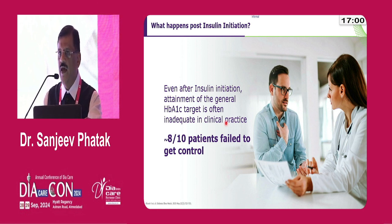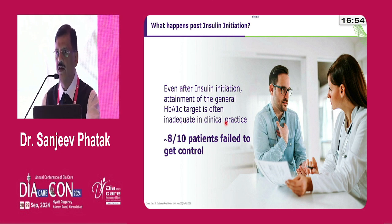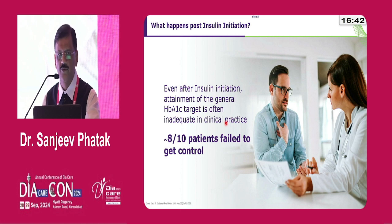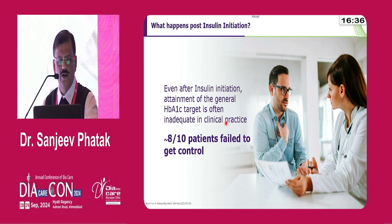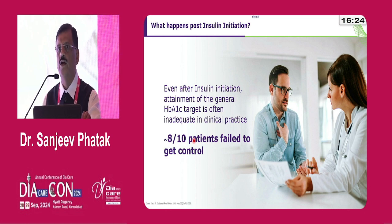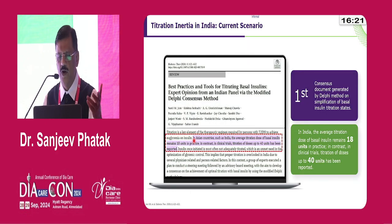Very few patients actually receive insulin despite deserving it — because of lack of control in spite of three or four drugs. Dr. Bhandari also told us that adding another drug when already on three or four does not help reduce HbA1c further, and that's why we need timely initiation of insulin. After initiation, only two out of ten patients achieve goal, and eight out of ten still fail — due to improper titration, optimization, or insulin technique, and sometimes poor adherence.